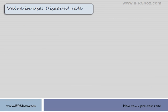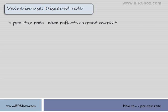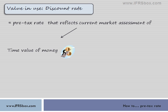Standard IAS 36 says that the discount rate used for value in use calculation should be a pre-tax rate — that is, before any income tax effects. The discount rate should reflect the current market assessment of both the time value of money for the periods until the end of the asset's useful life, and the risk specific to the asset.